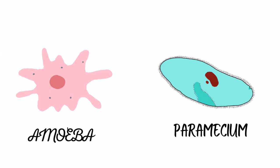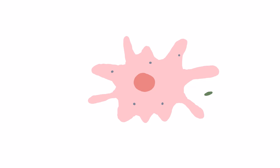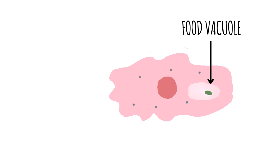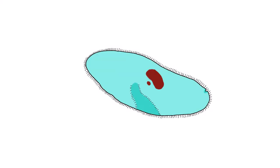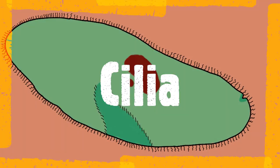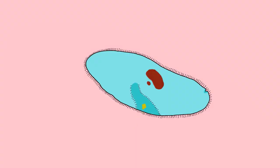Single-celled organisms like amoeba and paramecium have their own methods. Amoeba does not have a regular shape — it has temporary finger-like projections called pseudopodia. When food particles are nearby, it extends these projections to capture the food, which is then enclosed in a food vacuole. Enzymes are added, the food breaks down, and the digested material is absorbed through diffusion. Paramecium, unlike amoeba, has a definite shape. Food enters from a specific place. It has small hair-like structures called cilia, which help move food in. A food vacuole forms, enzymes are released, energy is extracted, and waste exits from a specific point.